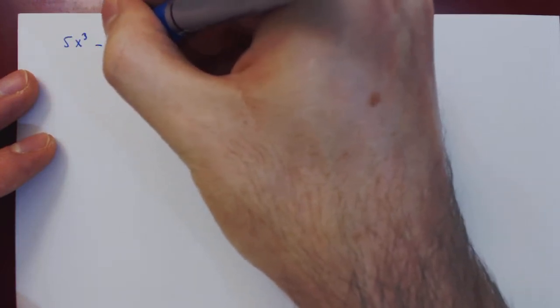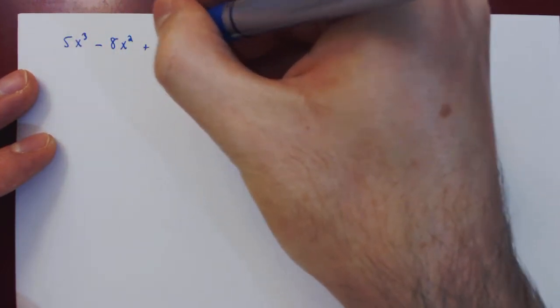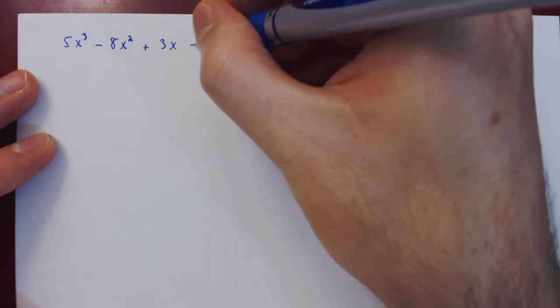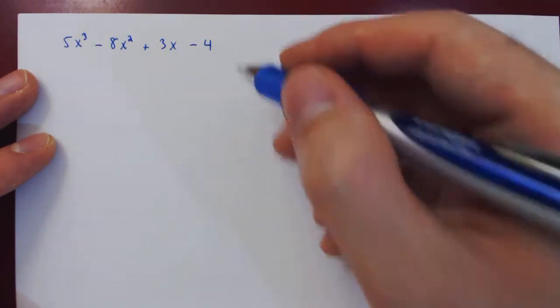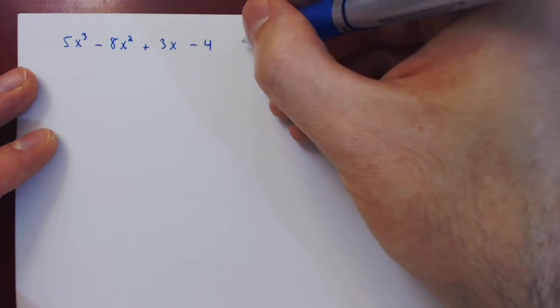Say we have 5x³ - 8x² + 3x - 4, and that we divide this polynomial by x - 2.